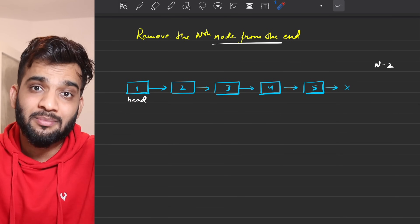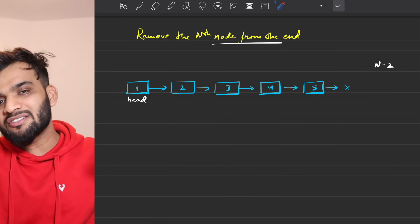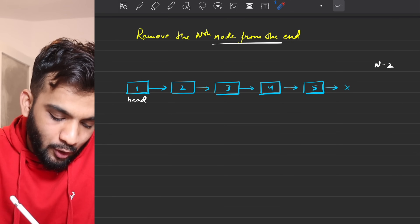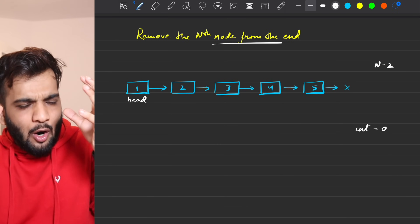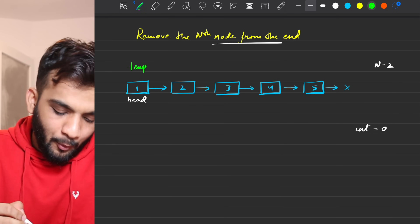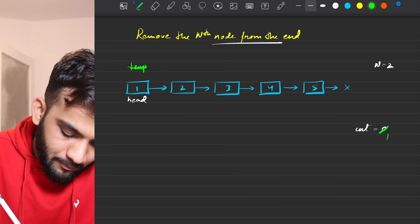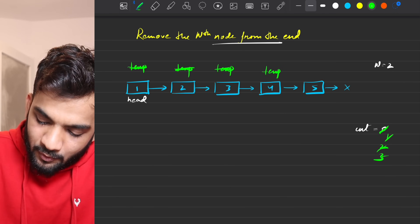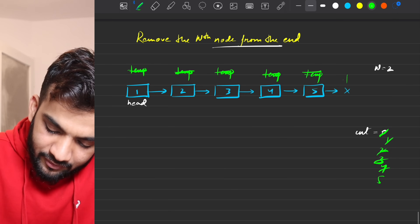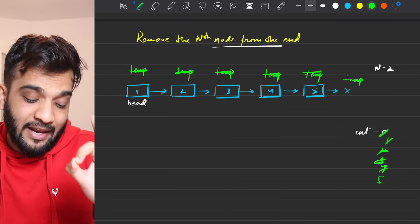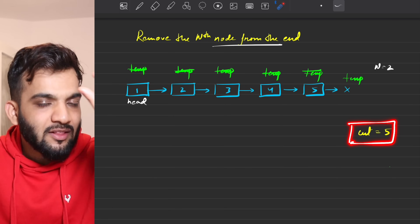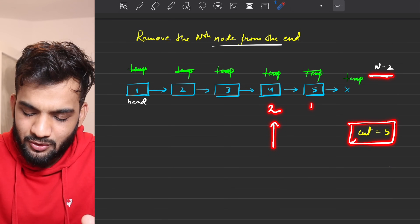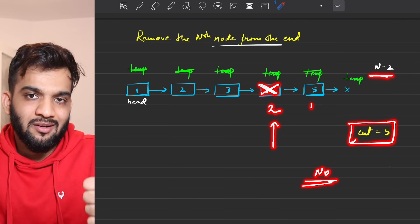The brute force approach: since we cannot traverse backwards, we take a counter variable and a temporary pointer at the head to count the length of the linked list. We traverse until temporary reaches null, incrementing the counter each step. When done, the counter gives us the length — in this case 5.